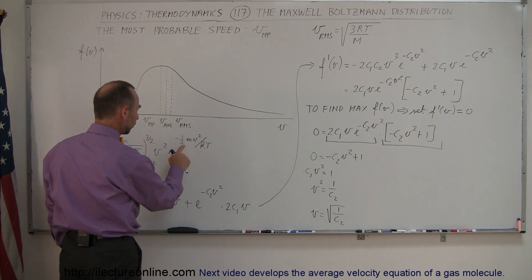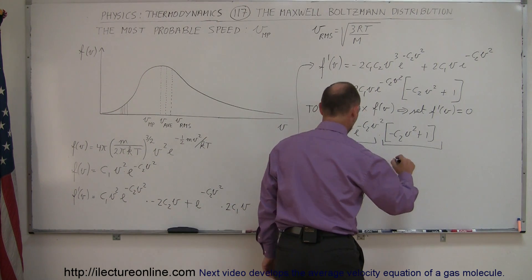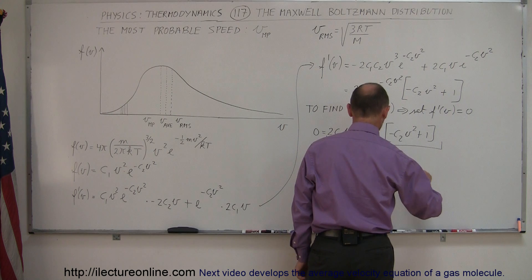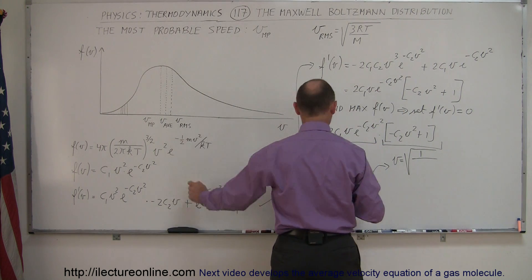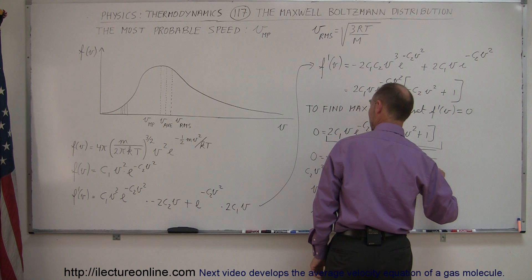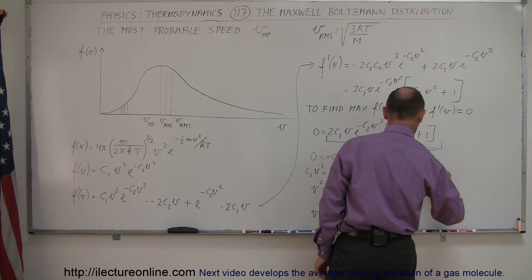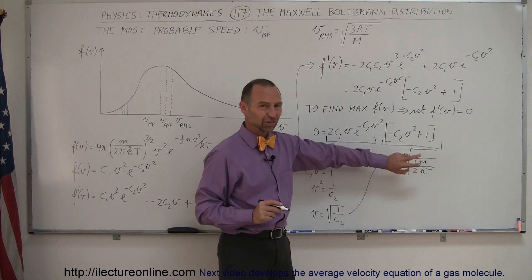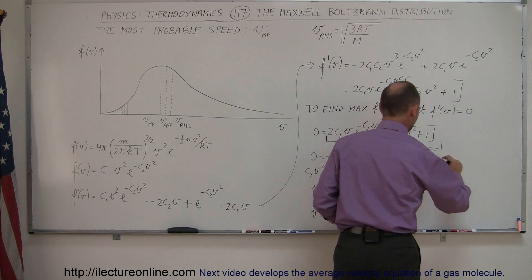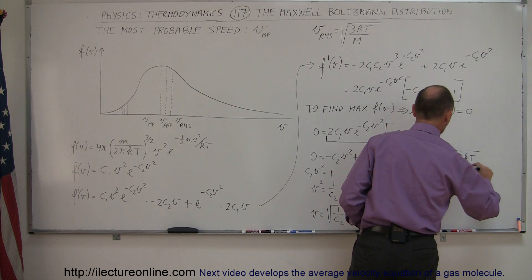So I'm going to substitute c2 for 1 half m over kt. So coming up here, we have v is equal to the square root of 1 divided by c2. And c2 would be 1 half m divided by kt, like so. And of course, I'm dividing by this fraction. So I then flip that fraction over. So this is equal to the square root of 2 kt over m.